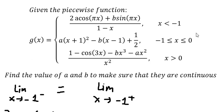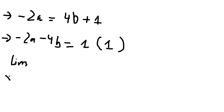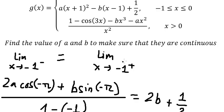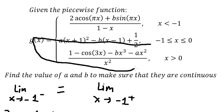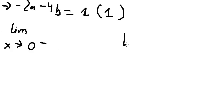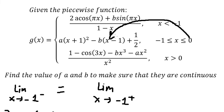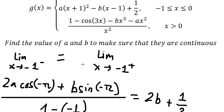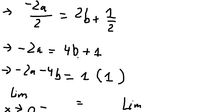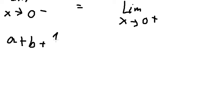Now let's go to x equals zero. When x is smaller than or equal to zero, this is about the limit on the left. When x is greater than zero, this is about the limit on the right. The limit on the left should equal the limit on the right. Putting zero in here gives: A, and negative b times negative one gives positive b, plus one over two.